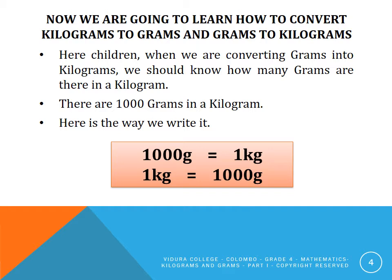Now we are going to learn how to convert kilograms into grams and grams into kilograms. When converting, we should know how many grams are in a kilogram. There are one thousand grams in a kilogram. So: one thousand grams equals one kilogram, and one kilogram equals one thousand grams.